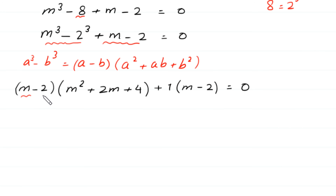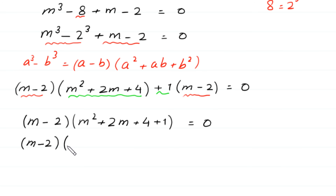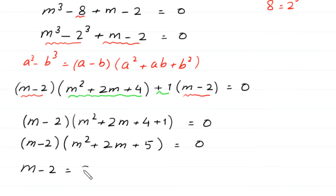Now, as you can see, (m minus 2) is a common factor. We factor out (m minus 2), leaving m squared plus 2m plus 4 plus 1 inside the bracket, which gives (m minus 2)(m squared plus 2m plus 5) is equal to 0.